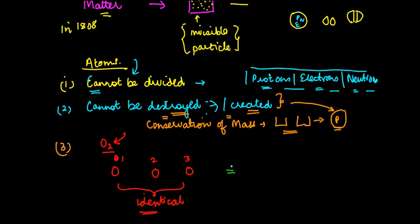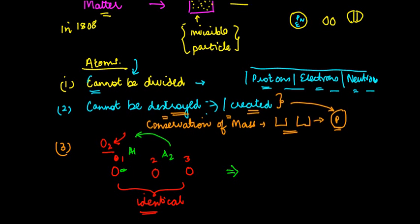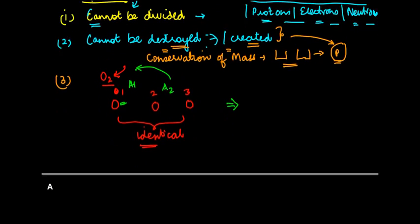Again, later on it has been proven that in some cases the weight of atom—let's say atom one—can be different from atom two, even though both of them might belong to oxygen. So that was one of the shortcomings of this particular theory which was there.